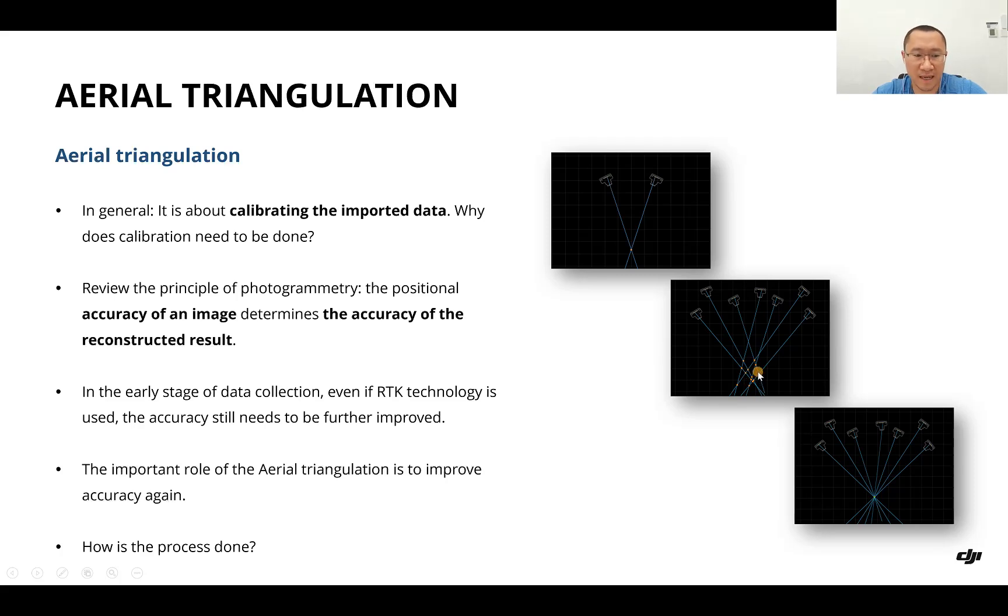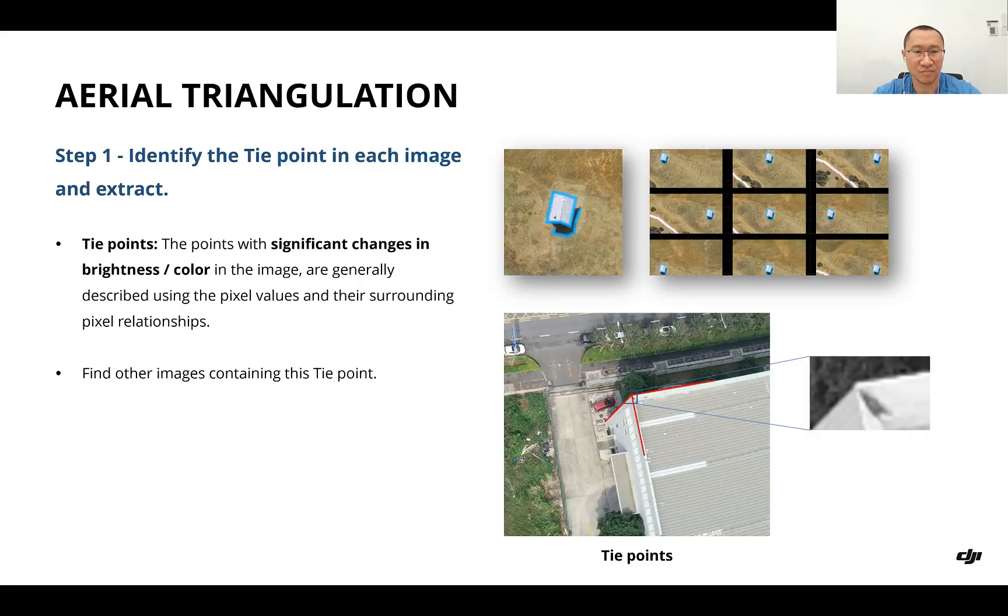How is this process done? Step one: we identify the tie points in each image and extract them. What is a tie point? Tie points are points with significant changes in brightness or color in the image.